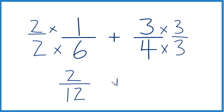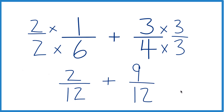Over here, 3 times 3 is 9, and 4 times 3 is 12. And 9 twelfths — that's the same as 3 fourths. They're equivalent fractions.